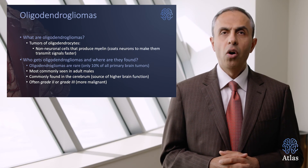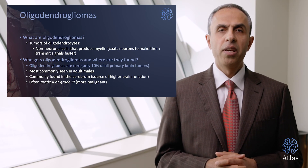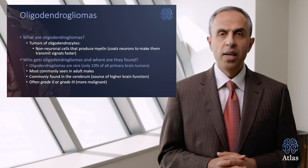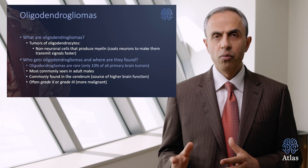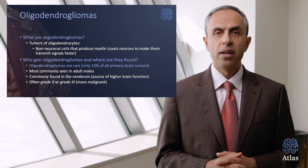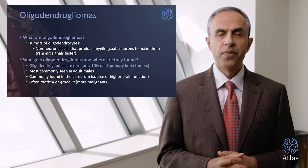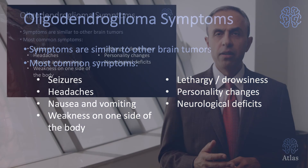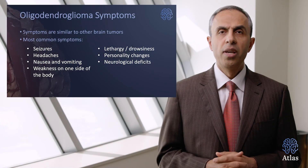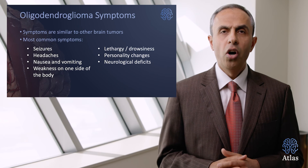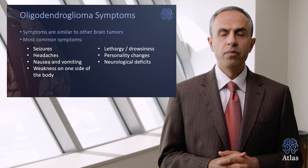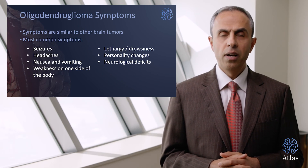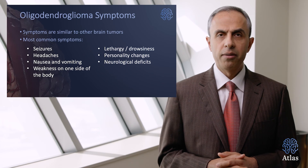Oligodendrogliomas can be grade 2 or grade 3, with grade 3 tumors being more malignant. The symptoms are very typical of other gliomas and very often include seizures, headaches, personality change, lethargy, and other focal symptoms such as weakness and numbness in parts of the body.